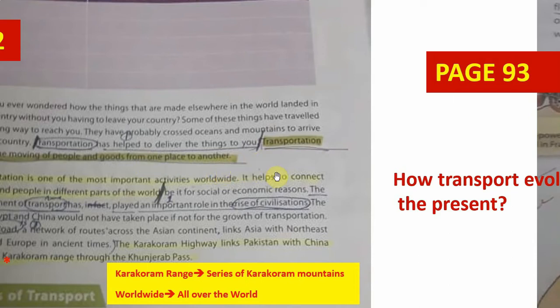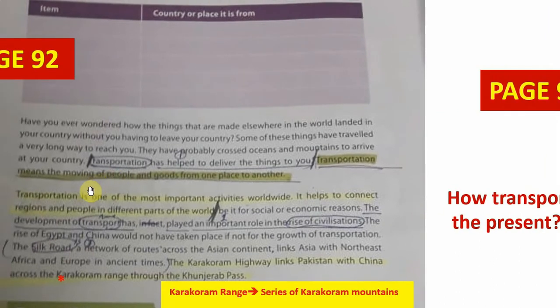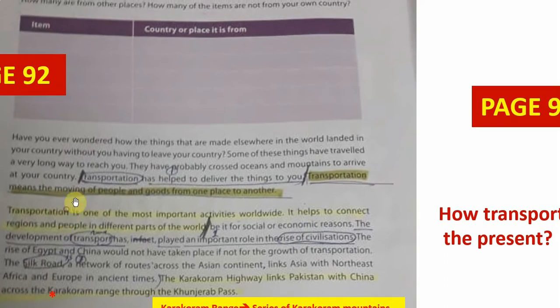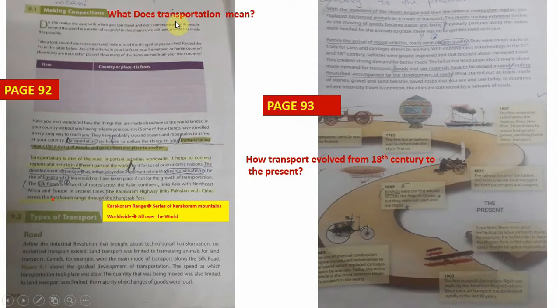This is the meaning of transportation as you can see on the page, and this is our first question of this chapter as well. What does transportation mean? And its answer is from this line: transportation means the movement of people and goods from one place to another. And the next two lines are also highlighted on this page.